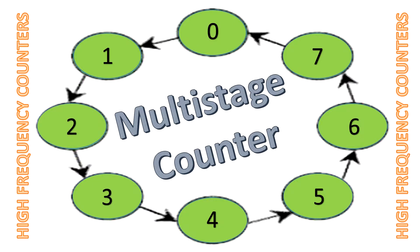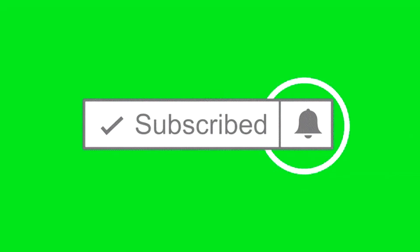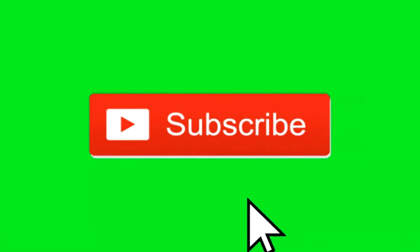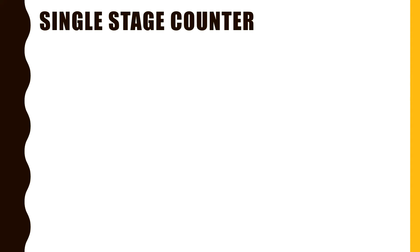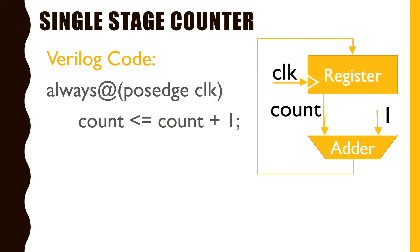Please subscribe to our channel for more knowledge updates. Single-stage counters are very easy to implement in any HDL language. For example, we simply need to write two lines in Verilog to implement them, and the logic synthesizer will implement them something like this. Count plus one is available at the output of the adder and at the input of the register, but this count variable will only be updated at the positive edge of the clock.